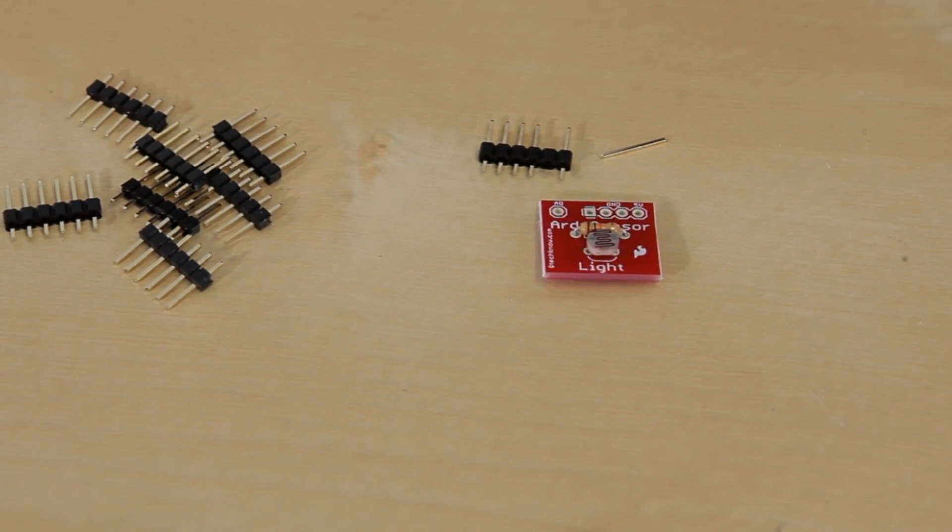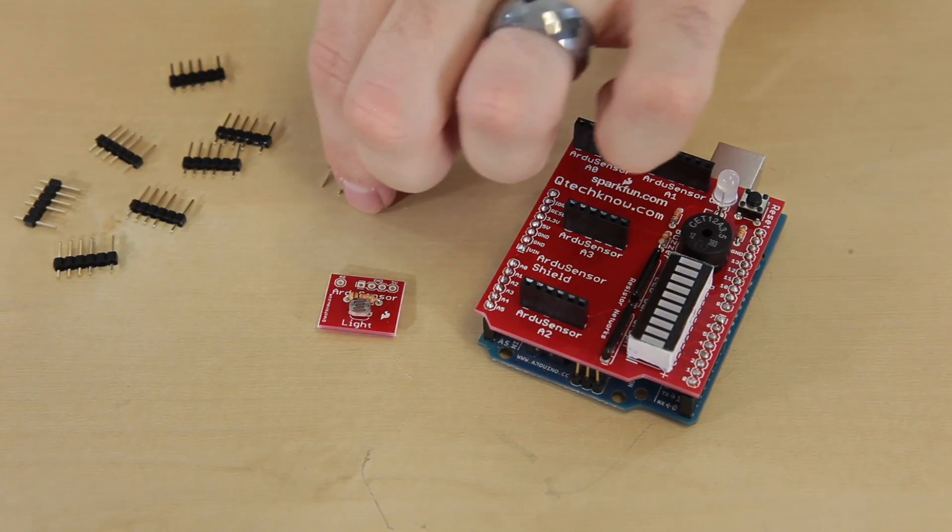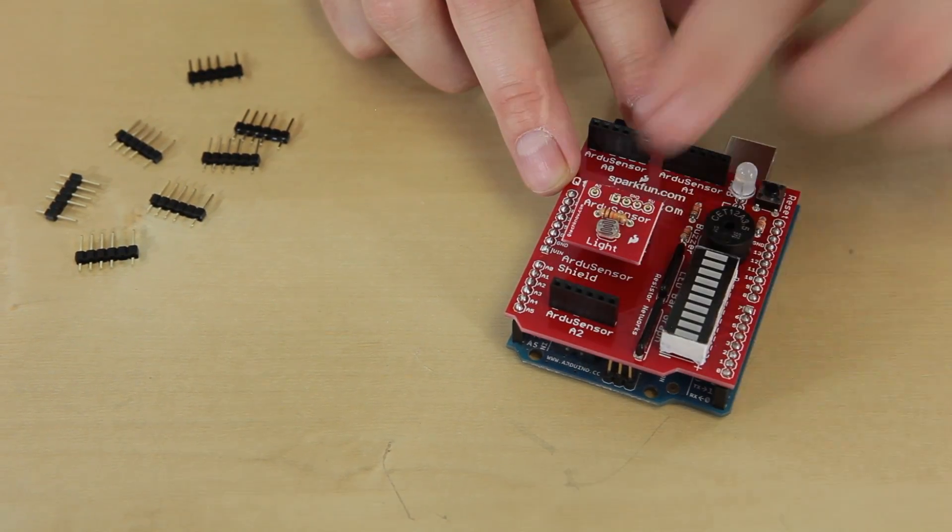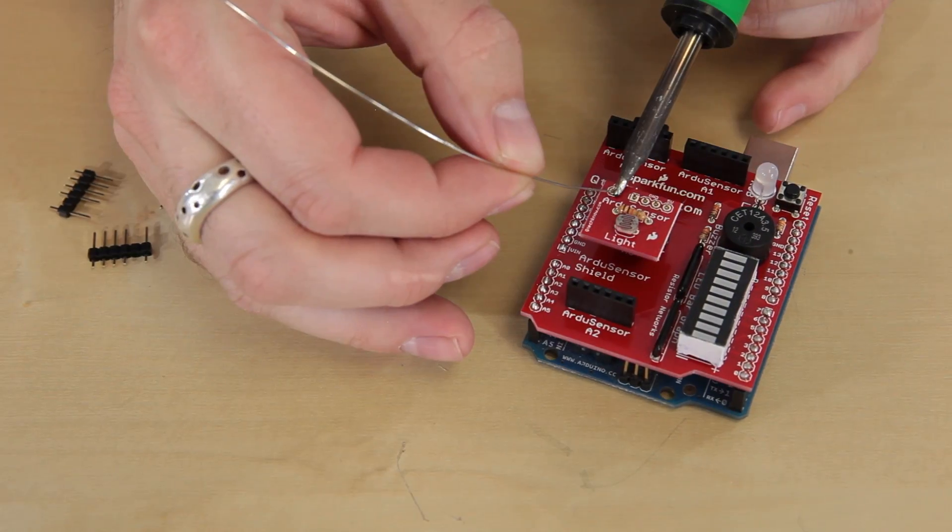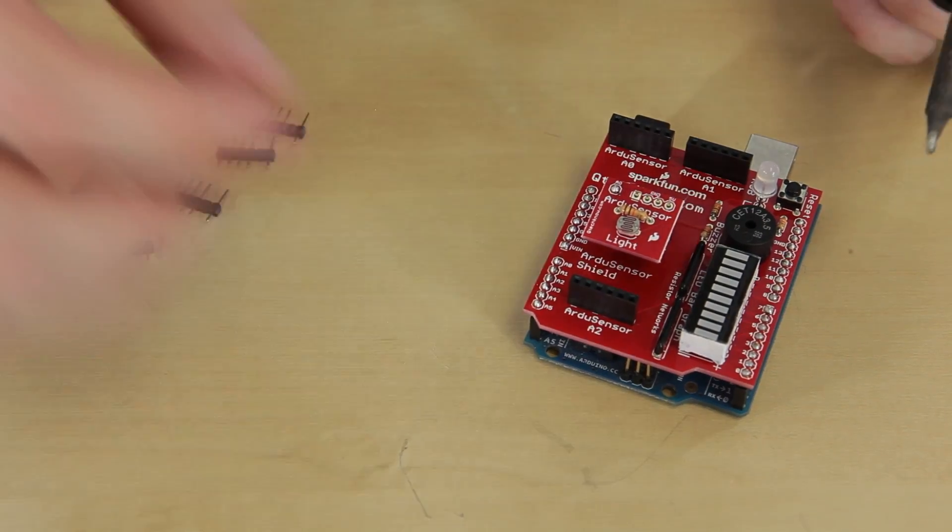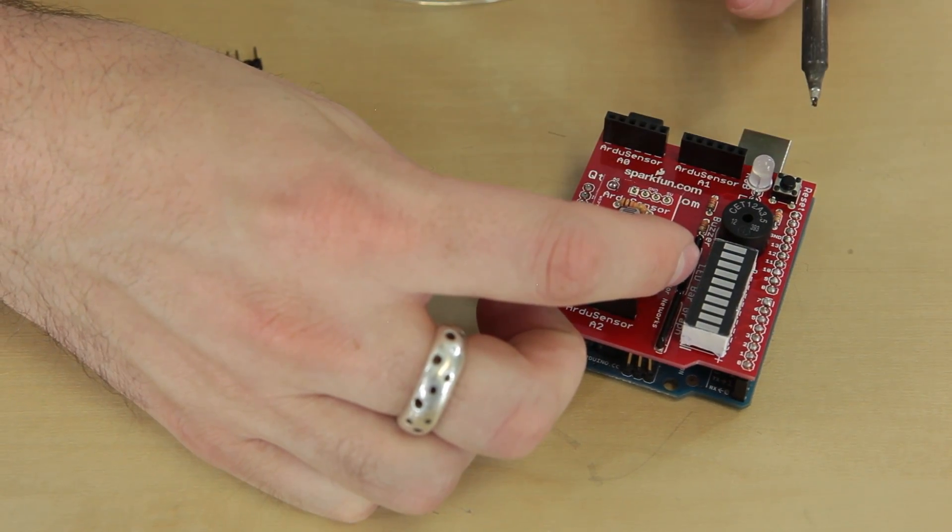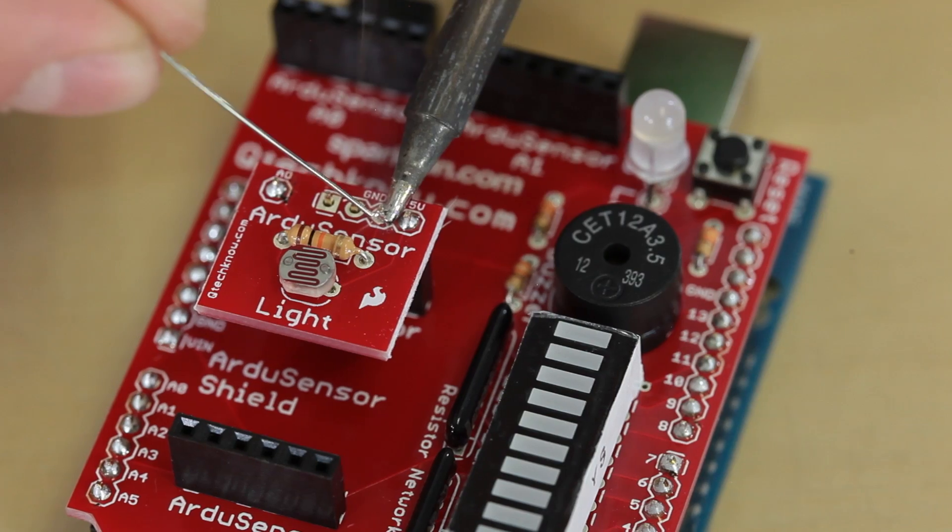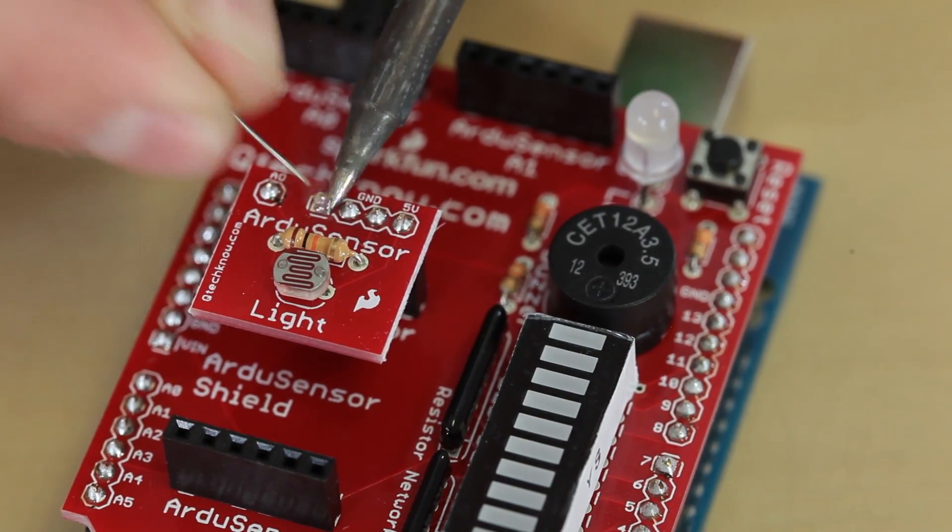Go ahead and repeat these steps for all the other boards. We're going to place the header into the socket, then position the sensor over top of it and solder just one of the pins. Then we can heat up the pin and adjust the board so it's level. All we have to do is solder the rest of the pins, and then repeat these same steps for all the rest of the modules.